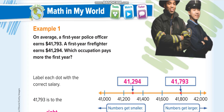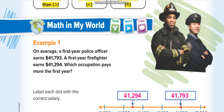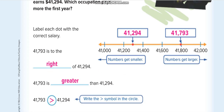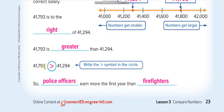The example question asks: on average, a first-year police officer earns forty-one thousand seven hundred ninety-three dollars, and a first-year firefighter earns forty-one thousand two hundred ninety-four dollars. Which occupation pays more in the first year? The answer is the police officer, because seven hundred is greater than two hundred. So forty-one thousand seven hundred ninety-three is greater than forty-one thousand two hundred ninety-four — police officers earn more in the first year than firefighters.